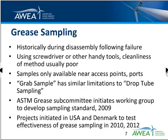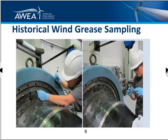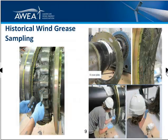In the same timeframe, projects were initiated in the U.S. and in Denmark to test the effectiveness of grease sampling in the 2010 to 2012 timeframe. Historically, you get the bearing back to the shop, disassemble it at least partially, and reach inside to try to extract the grease. Here's a photograph from a major wind OEM workshop where the technician has partially disassembled the bearing and is grabbing grease from between the rollers, with the idea that grease from those locations will have the most information.